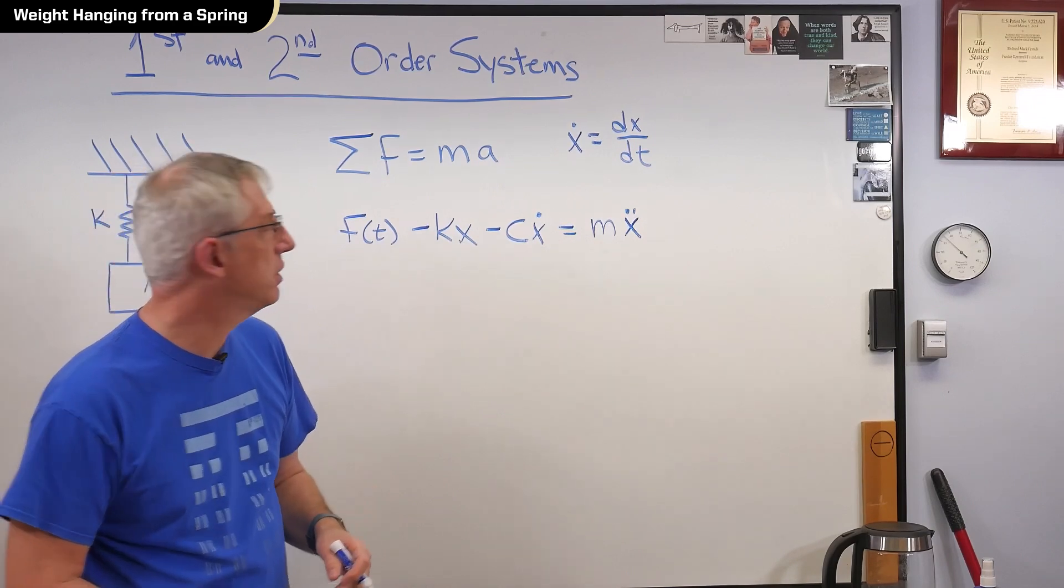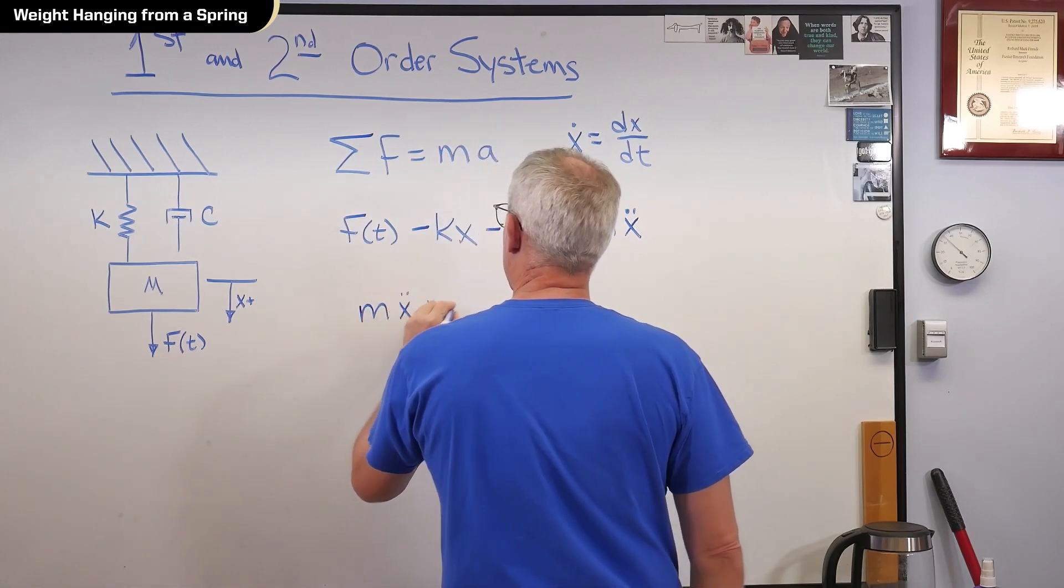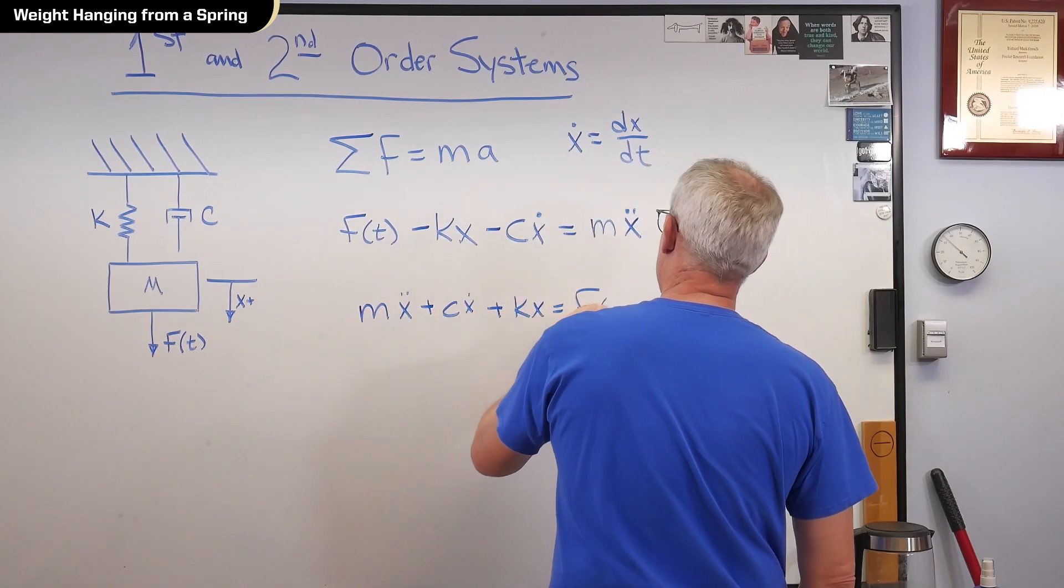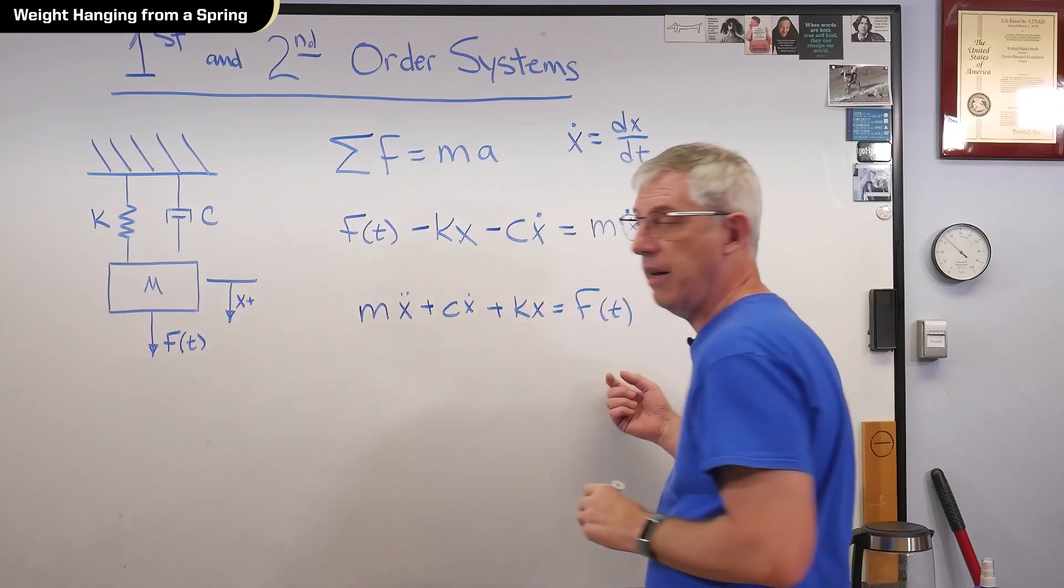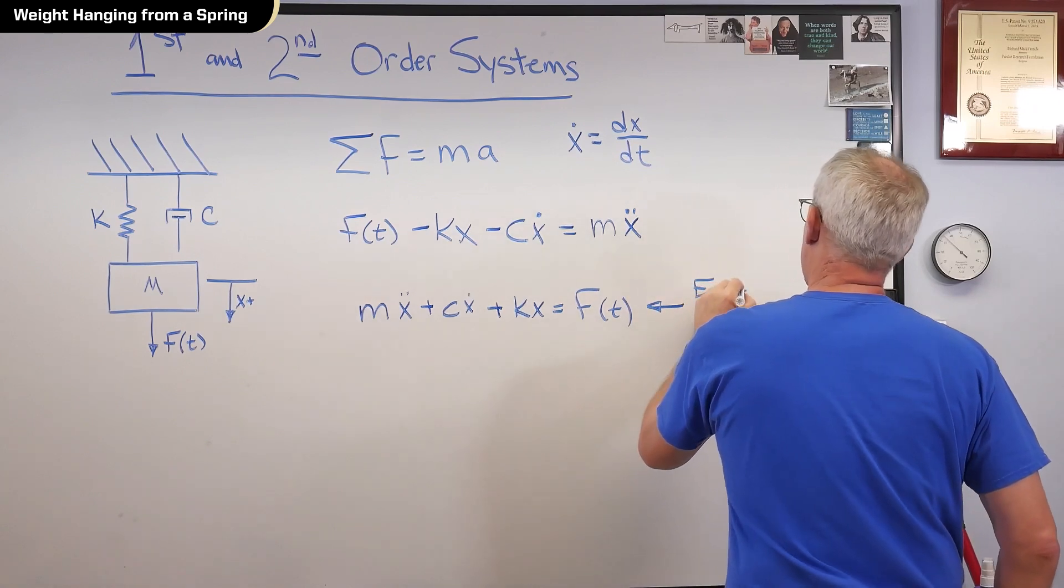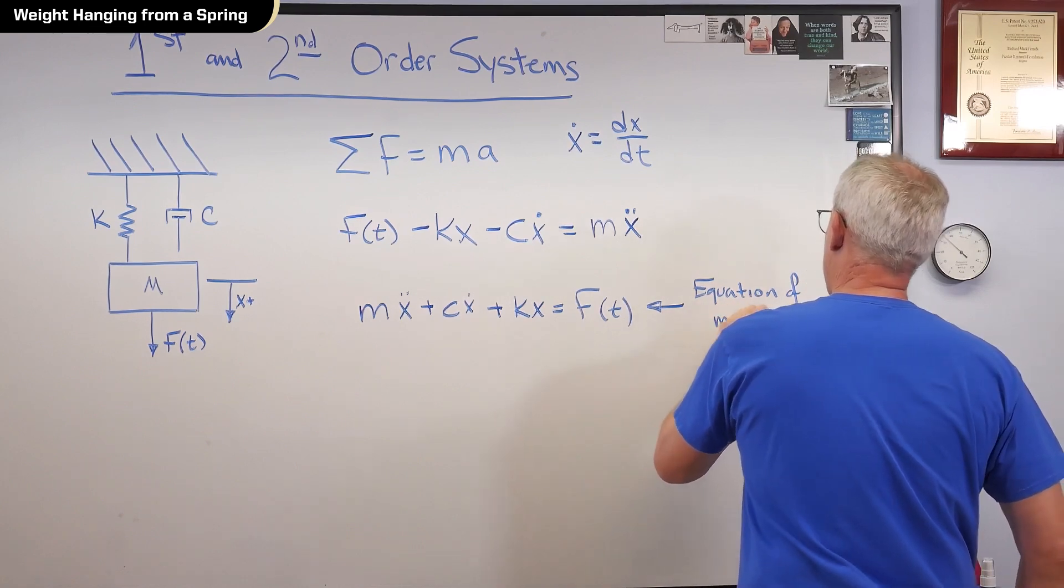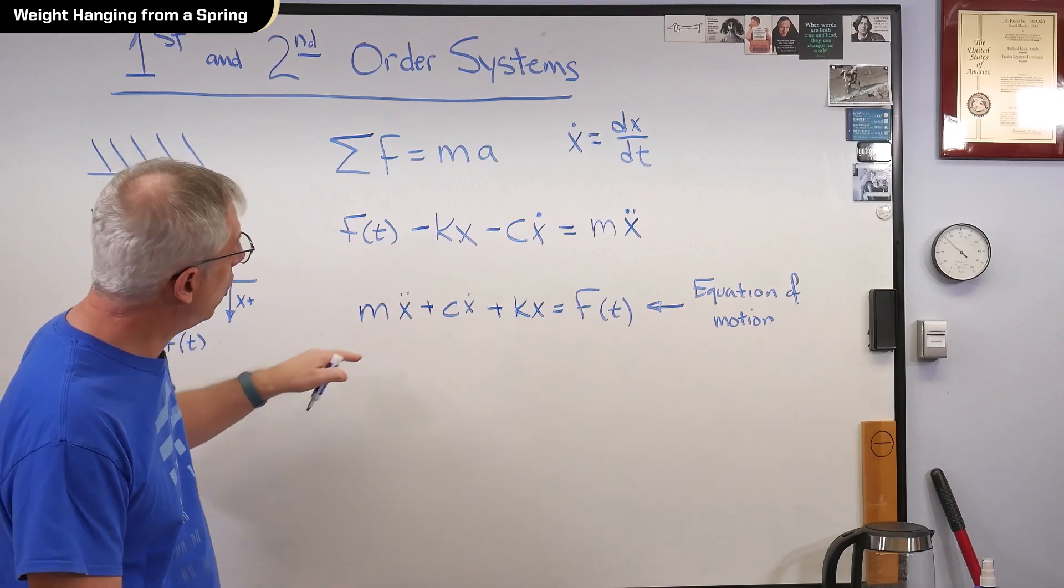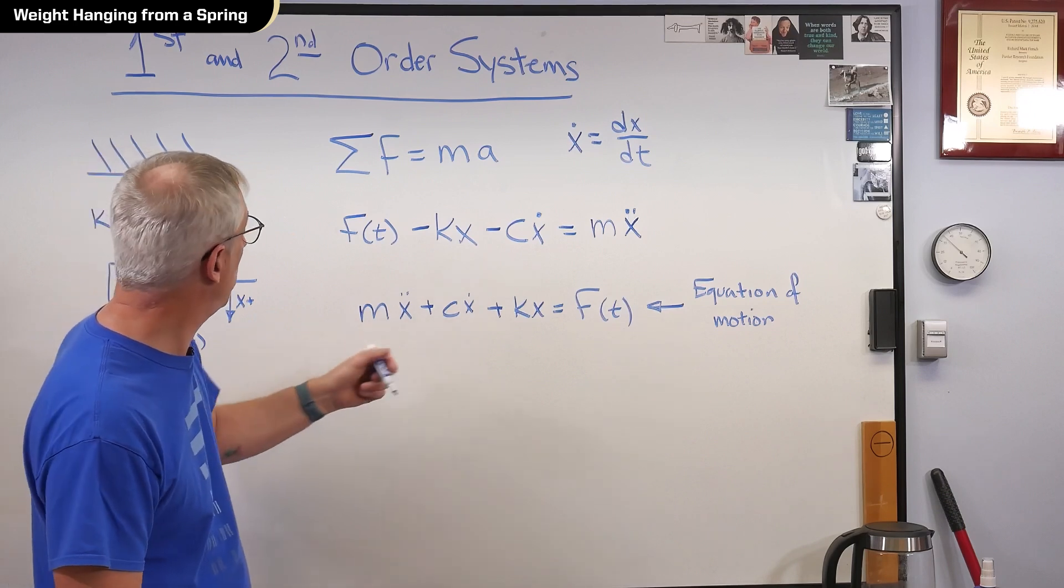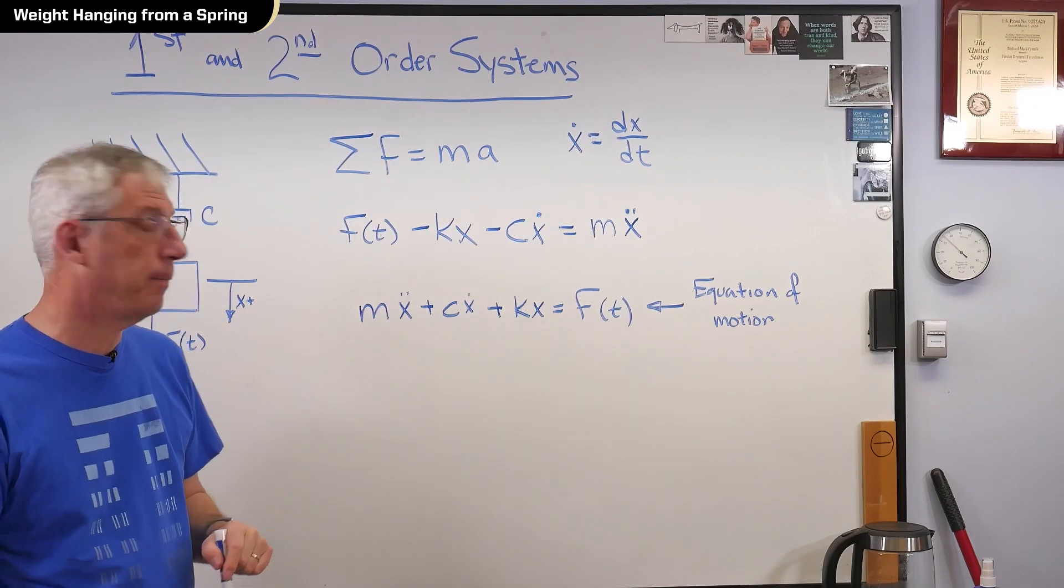So, let's rearrange this a little bit. And I'm going to get MX double dot plus CX dot plus KX equals F of T. That's called an equation of motion. If you know M, C, and K, and you know what the external force is, you can figure out what the motion of that mass is going to be. And see right there, those two dots? That makes it a second order system.